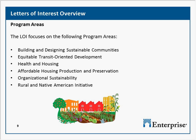In the LOI, we have six program areas: building and designing sustainable communities, equitable transit-oriented development, housing, affordable housing production and preservation, organizational sustainability, and the Rural and Native American initiative.